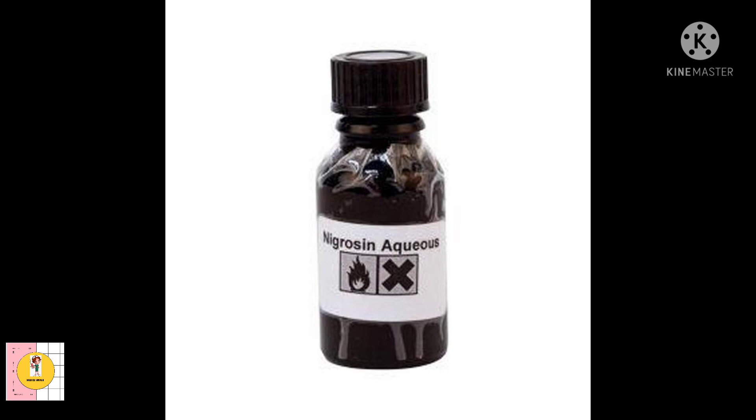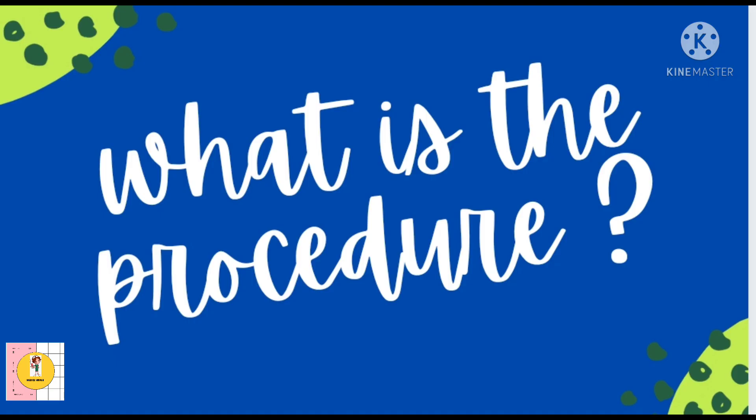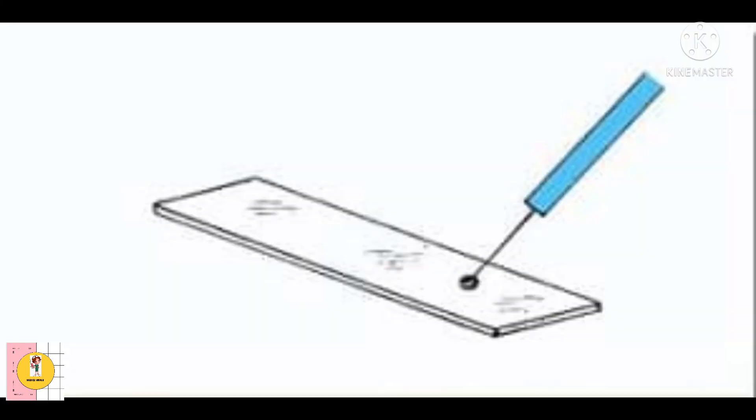So let's see the procedure. First step: a drop of India ink or nigrosin is taken on the slide. So here we are placing the ink on the side of the slide.